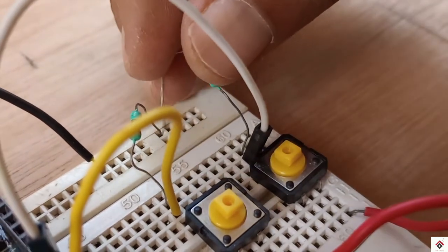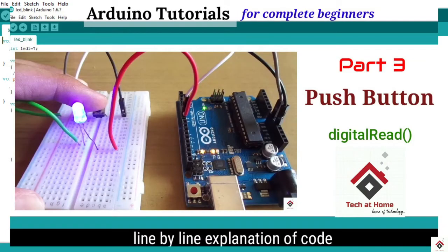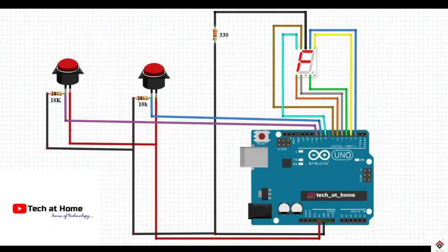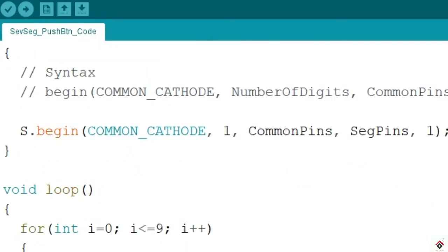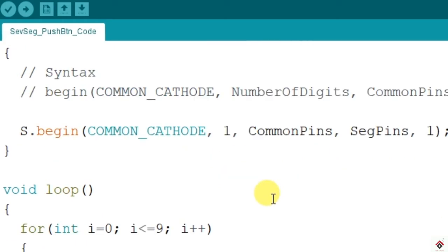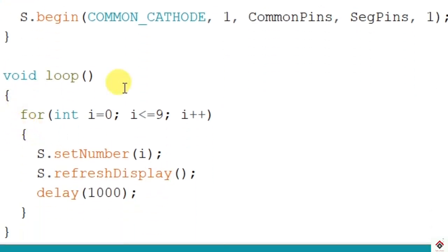Coming to the coding part, I'll be using the same code from my previous tutorial. So we have the header file 7-seg and pin declarations, initialization, and in the looping section we are incrementing the count on the display from 0 to 9. Up to here you will get it in my previous tutorial.